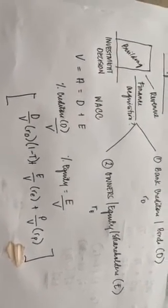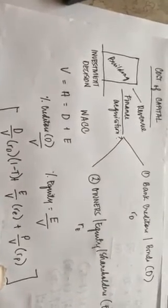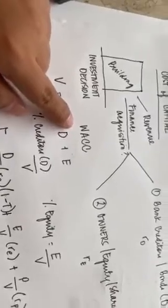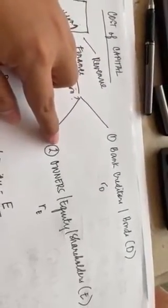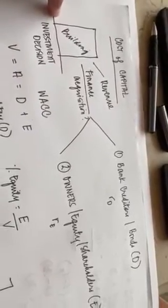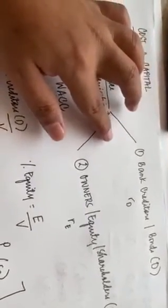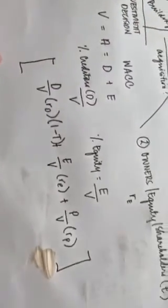We said earlier that determining the cost of capital is important because this actually serves as the hurdle rate for companies. If the project should earn a rate of return that is more than the hurdle rate or the cost of capital — because if not, then the project may not be worth undertaking by the company. The weighted average cost of capital comes into play if the company employs different sources of funds in order to finance a particular project. If the company employs more than one source of capital, then we have to get the weighted average cost of capital.